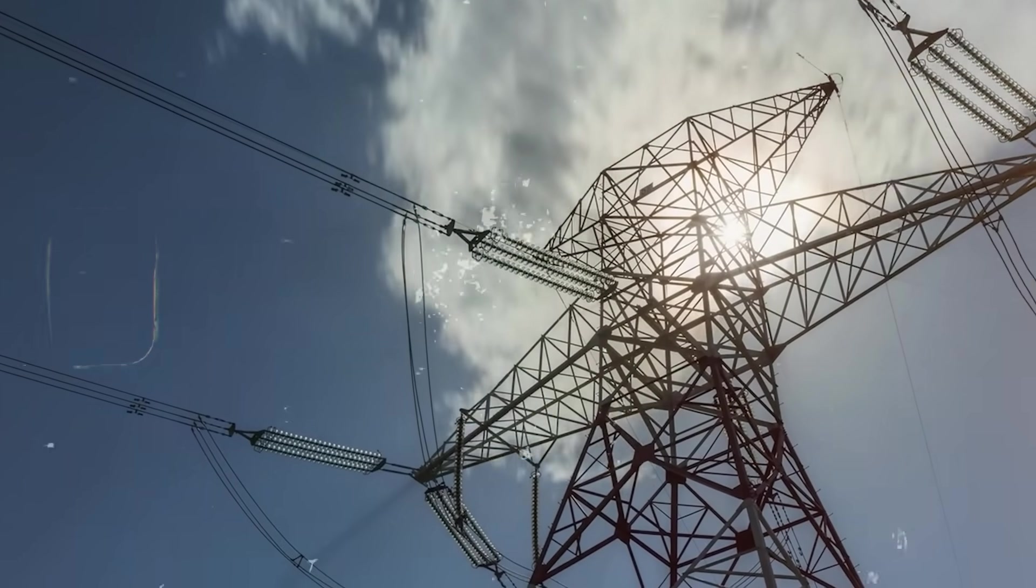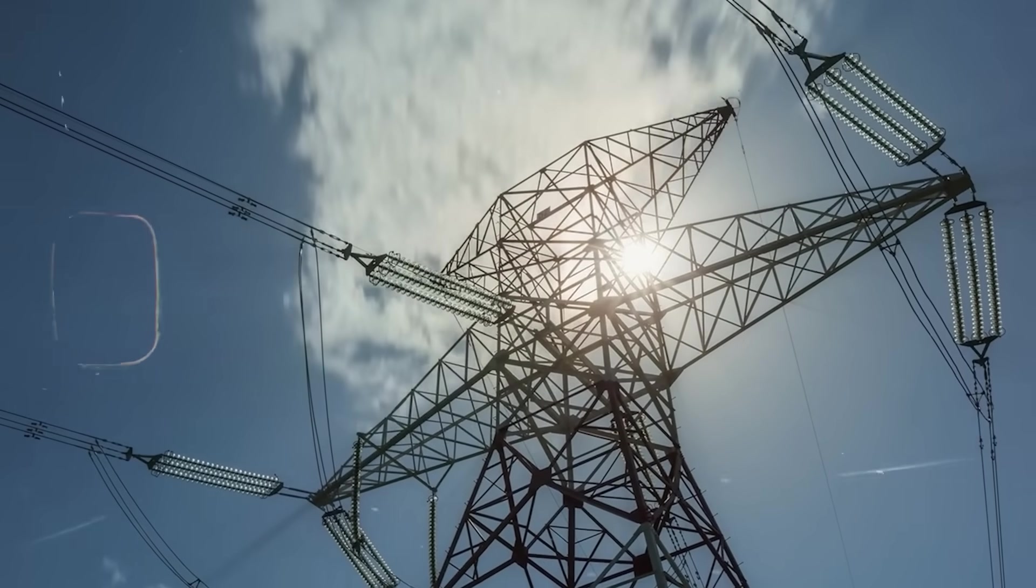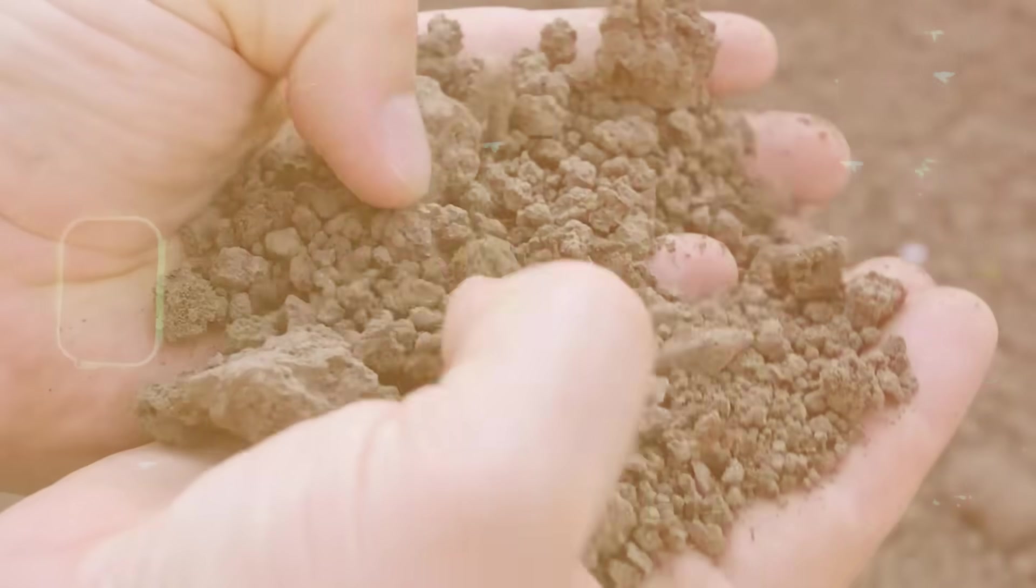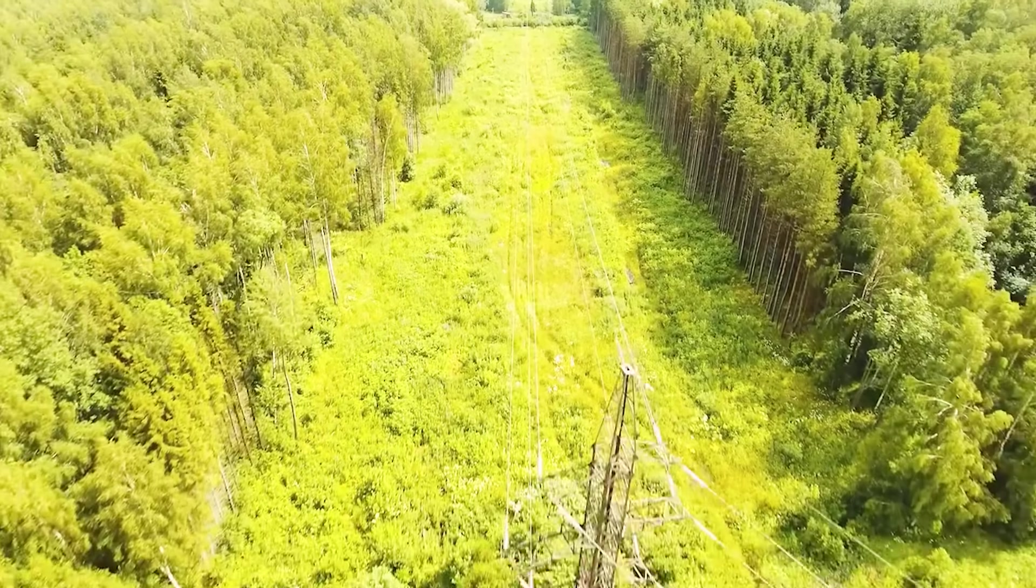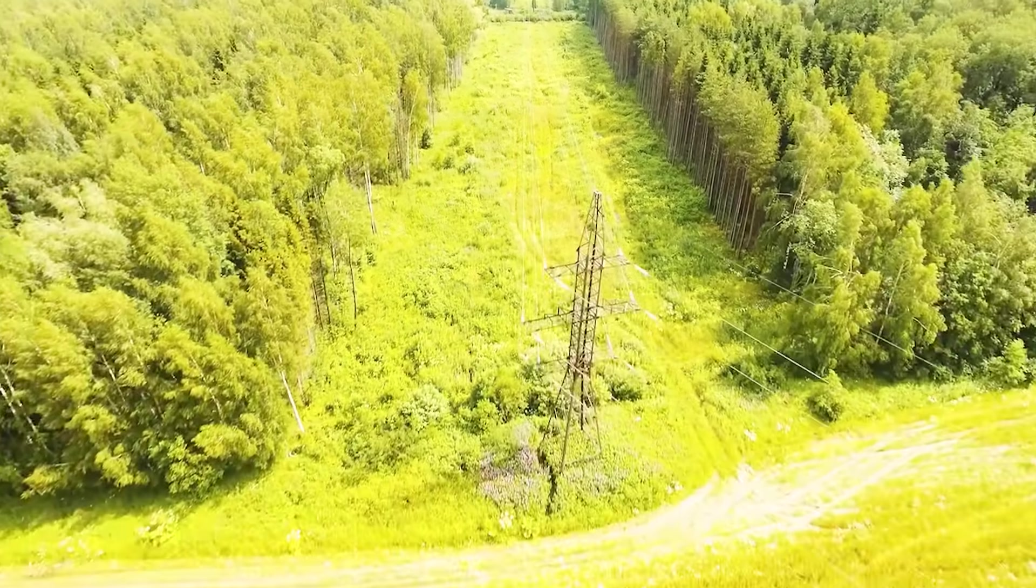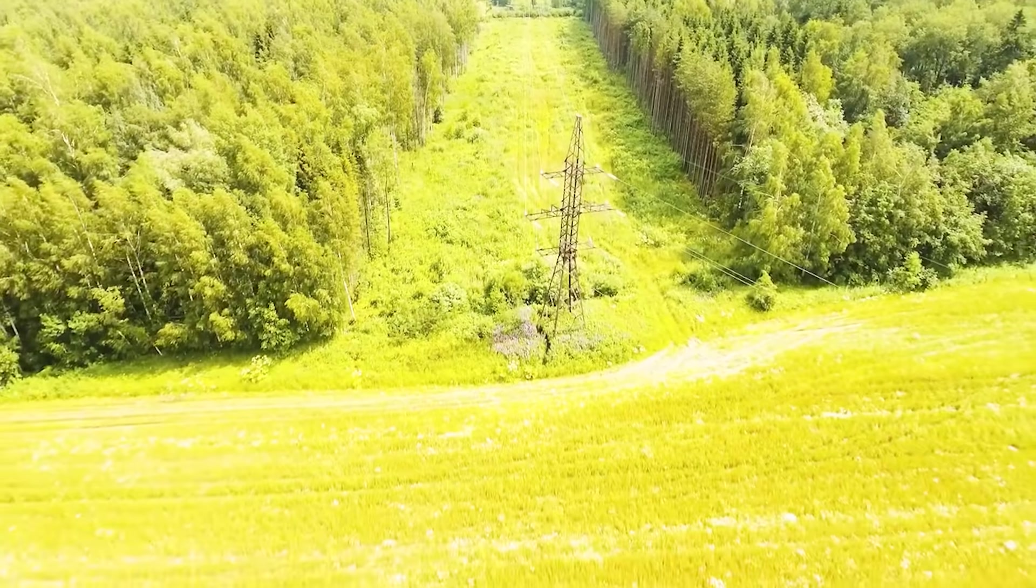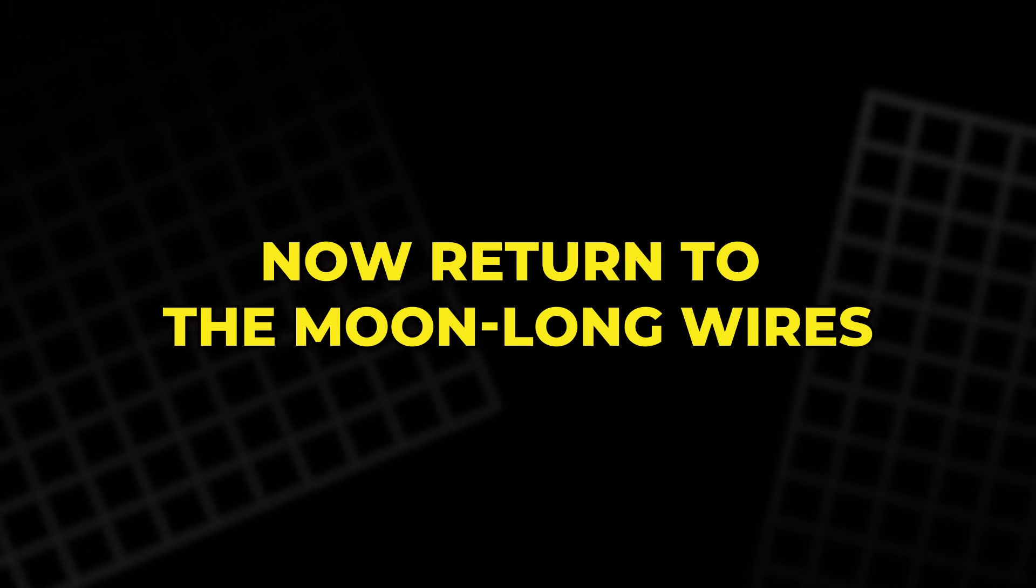The same logic explains why power lines are held high above the ground. Even damp soil conducts a bit, so air is used as a wide insulating gap to keep the fields from coupling too strongly to the earth. Now return to the moon-long wires.